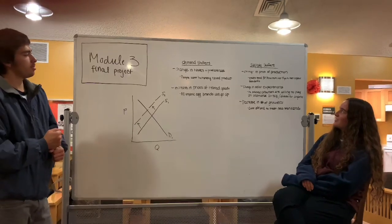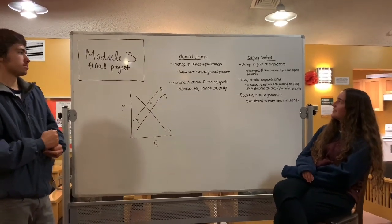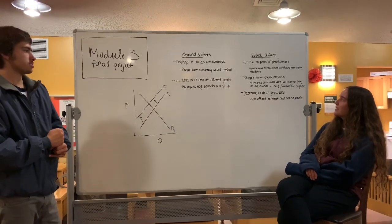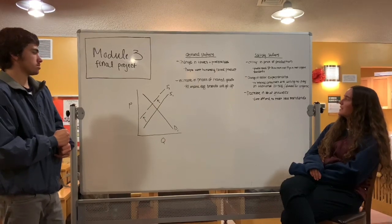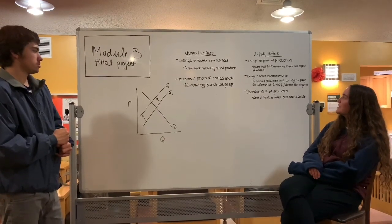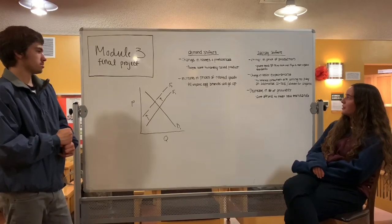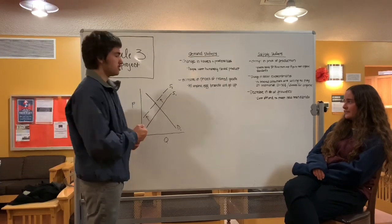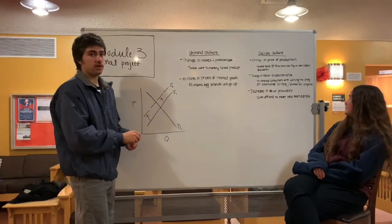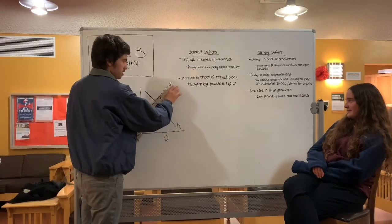Our next supply shifter is a change in seller expectations. That is because the suppliers believe that consumers are willing to spend an additional 21 to 50 cents on a carton of organic eggs over your non-organic. So what this is going to do is shift our supply curve back down to the right, back where we started.